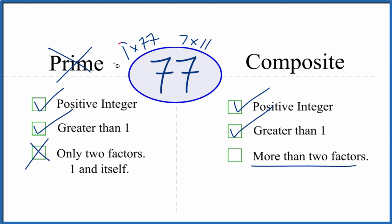Are there more than two factors? Yes, there are four factors that go into 77 evenly: 1, 7, 11, and 77. So it is a composite number. This is Dr. B, thanks for watching.